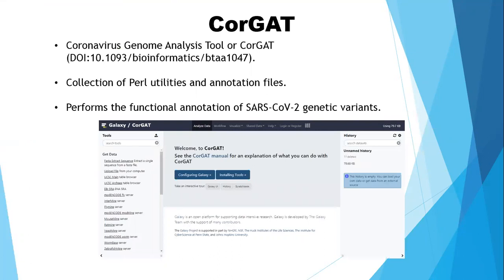Corgat, or the Coronavirus Genome Analysis Tool, is a collection of utilities and annotation files which are used to perform the functional annotation of SARS-CoV-2 genetic variants.